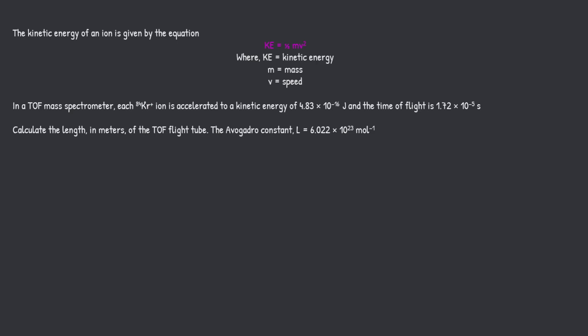Now, in a time-of-flight mass spectrometer, each 84 krypton ion is accelerated to a kinetic energy of this number right here. I'm going to underline that for later use, and the time-of-flight is 1.72 times 10 to minus 5. Calculate the length in meters, so that's what they want. They want the length in meters of the flight tube, and they've given us good old Avogadro constant. So think to yourself, where would I go from here? What do I have? What have they given me in the question that I can use to my advantage?